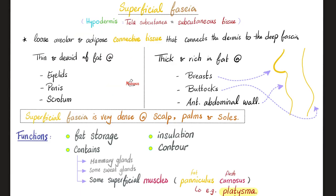Superficial fascia is loose areolar adipose connective tissue that connects the dermis to the deep fascia. Sometimes the superficial fascia is very thin with no fat, such as in certain areas of the body. In other parts, it is thick and very fatty. In other places, it is very dense, such as the scalp, the palms of the hand, and the soles of the feet.